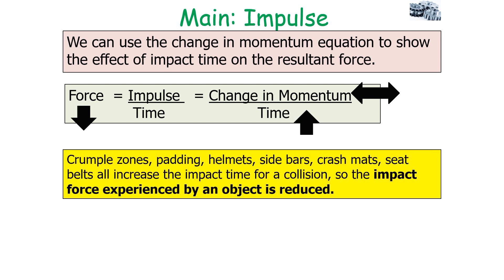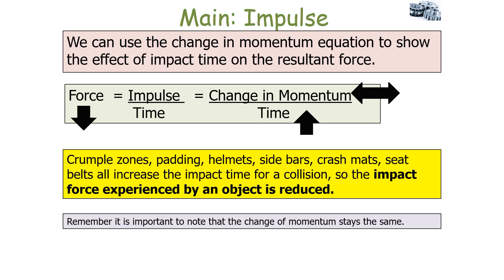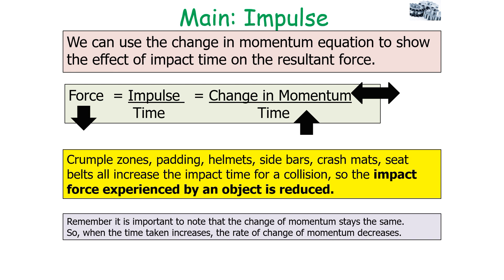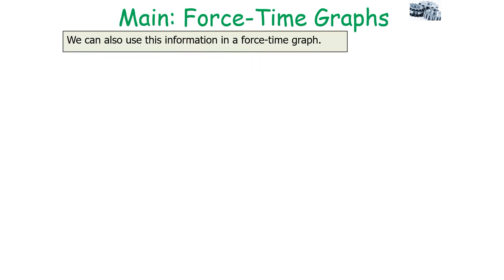As I've mentioned before, crumple zones, padded helmets, airbags, crash mats, seatbelts, all increase the impact time for a collision. So the impact force experienced by the object is reduced if we assume that the change in momentum, the impulse in the interaction stays the same. So when the time taken increases, the rate of change of momentum decreases. That's an important idea because it means the change of momentum every second decreases.